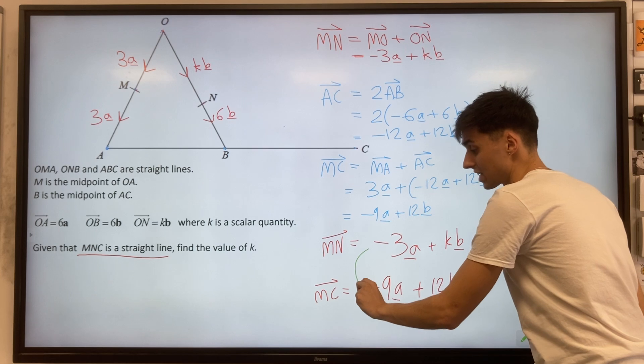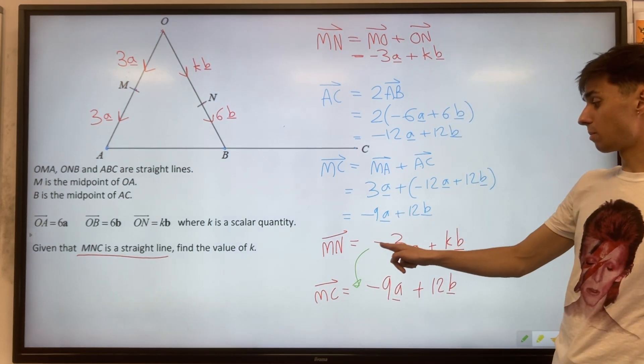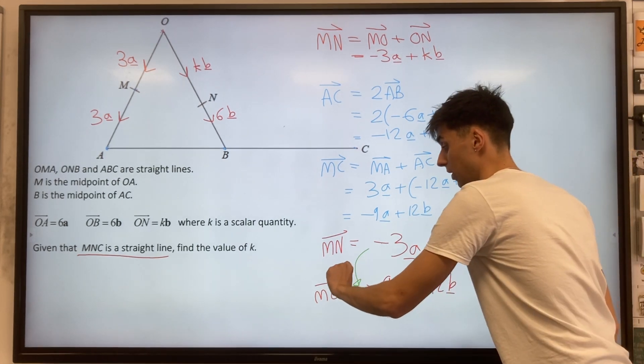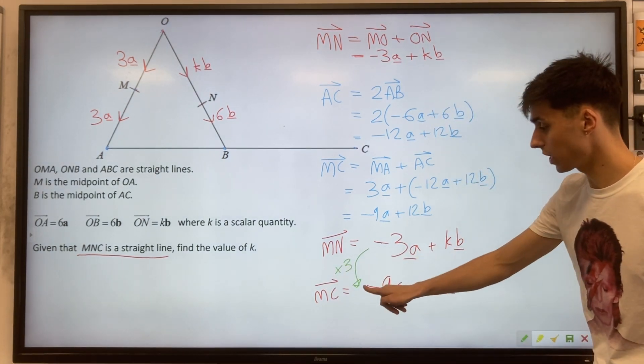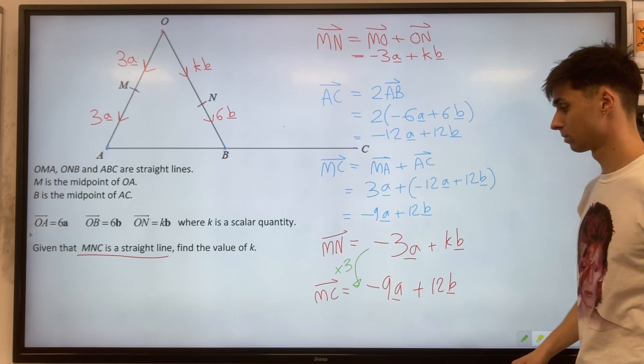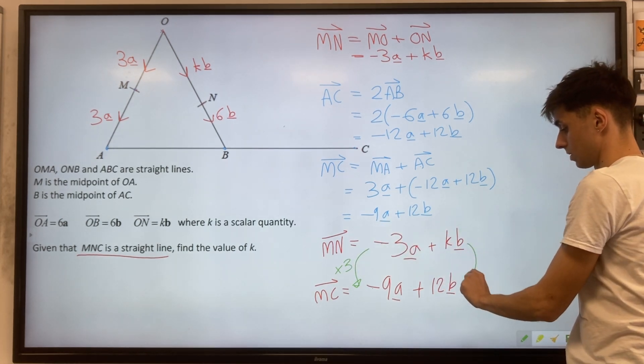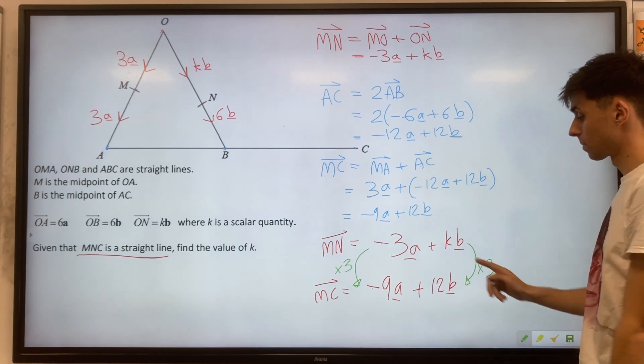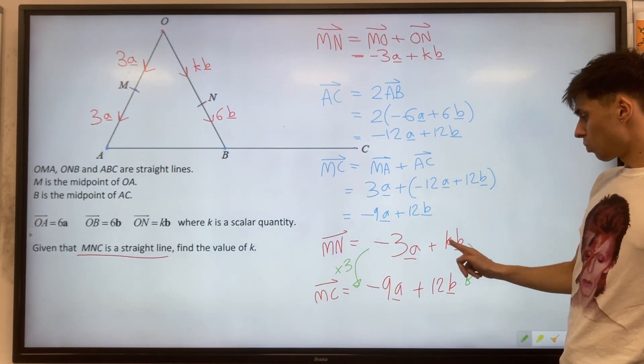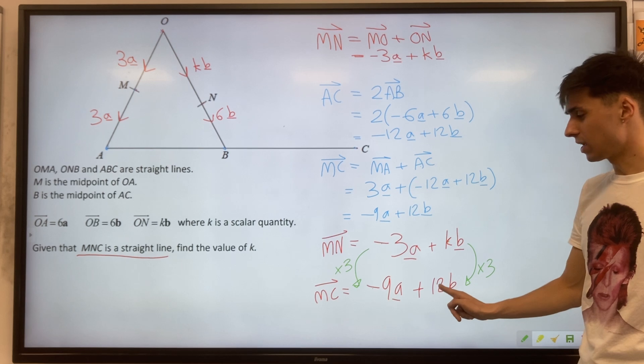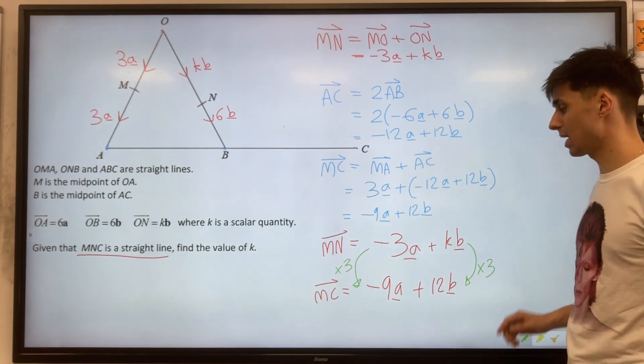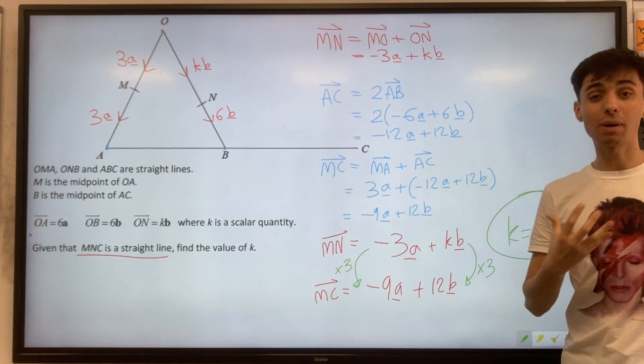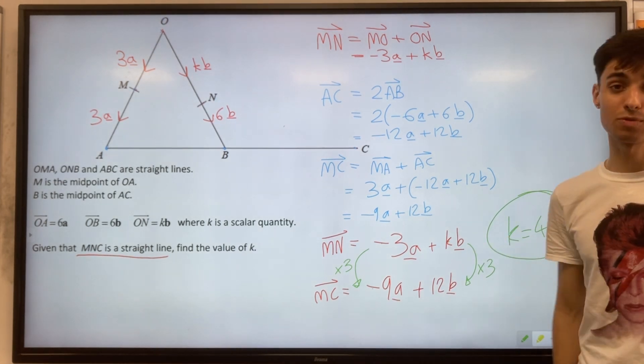Because to go from minus 3 to minus 9, you must be multiplying by 3. So I'm representing by saying times 3 from MN to MC. That means on the other side, we also must be multiplying by 3 for the B vectors. So k multiplied by 3 is giving us 12. That means k must be 4. So by thinking about those scalar multiples, we found k equals 4.